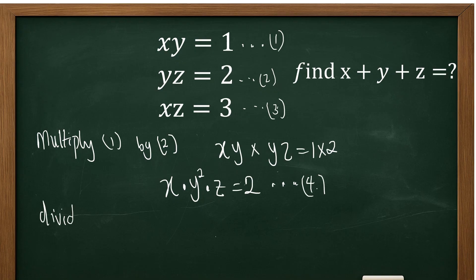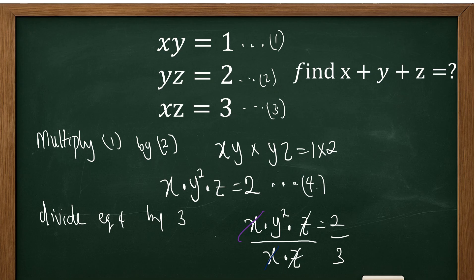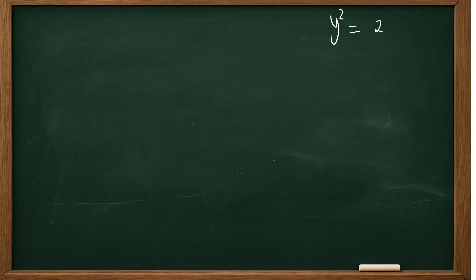Now we can divide equation 4 by equation 3. Equation 4 is x times y squared times z equals 2, divided by equation 3, which is xz equals 3. Here we can see that x is common to both sides and z is also cancelled. So we get y squared equals 2 over 3.